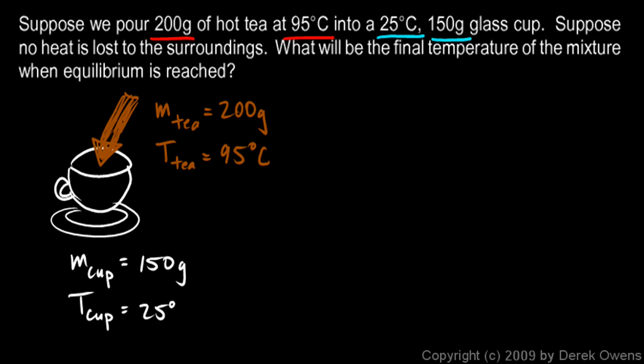So in other words, conservation of energy applies here to our system. Our system is these two objects, the tea and the cup. And we can say that the heat lost by the tea is equal to the heat gained by the cup.